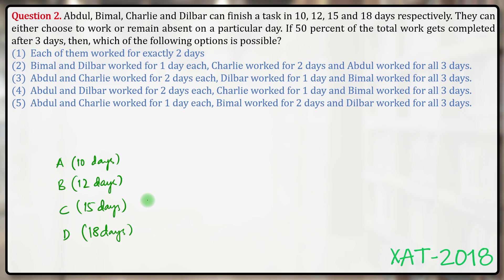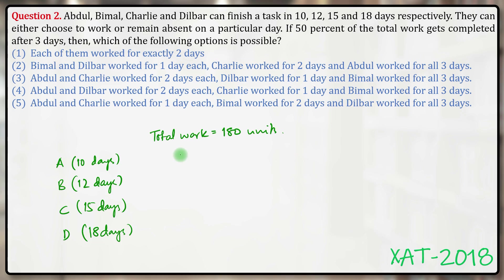For total work, the LCM of 10, 12, 15, and 18 will make calculations much easier. So I am going to assume the LCM of 180 to be the total work — total work = 180 units. Since Abdul completes 180 units in 10 days, Abdul's efficiency is 18 units per day.